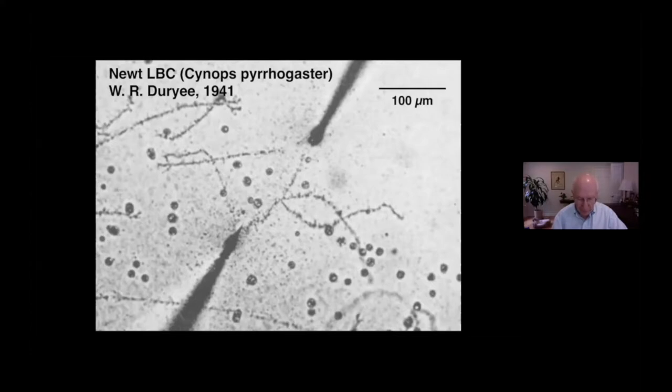They had been given the quaint name of lampbrush chromosomes because of their imagined resemblance to the brushes used at that time for cleaning the soot from oil lamps. This has remained the name for these remarkable structures.